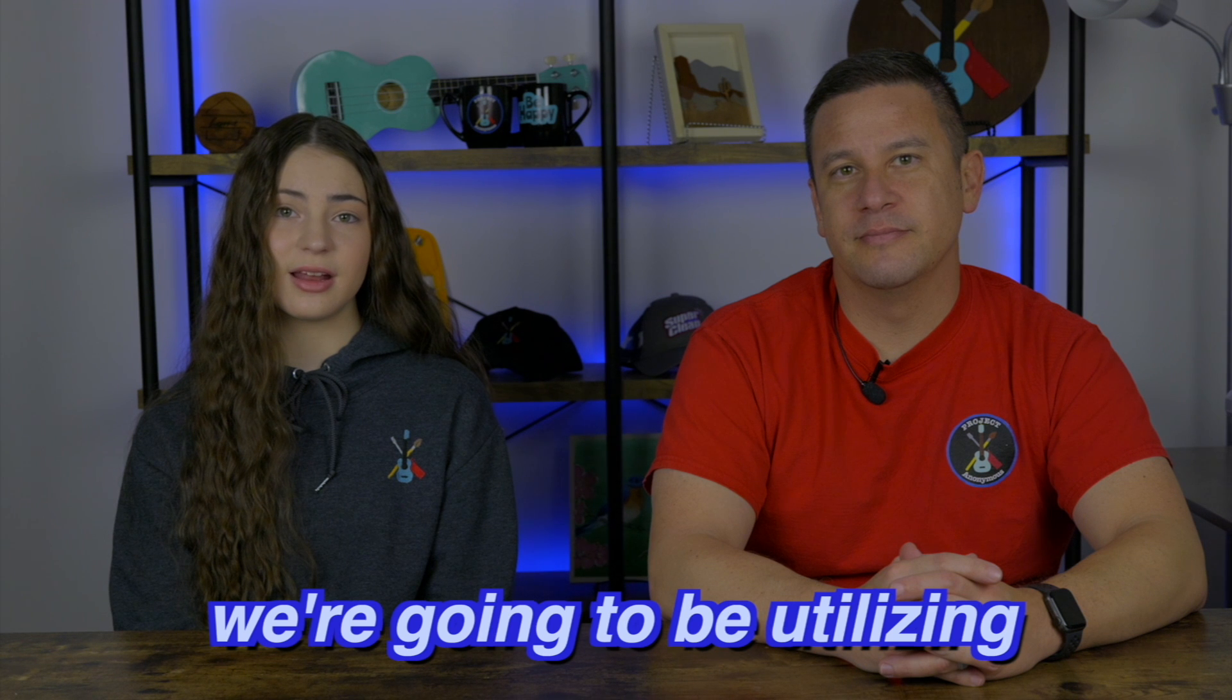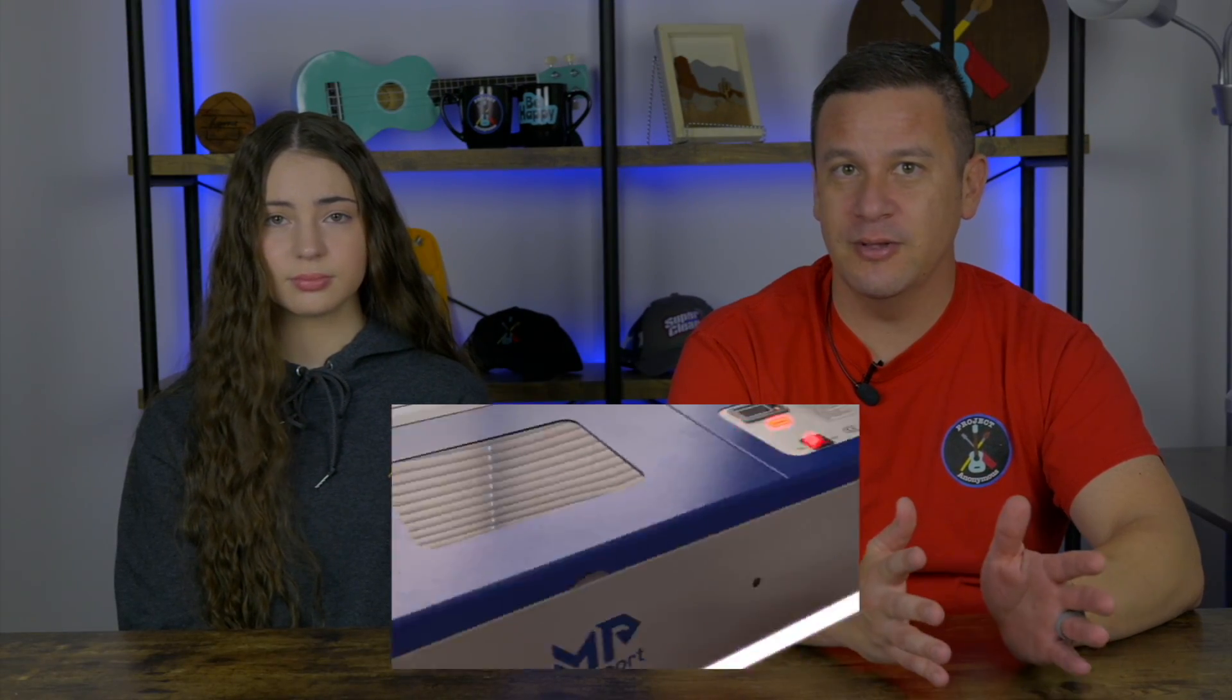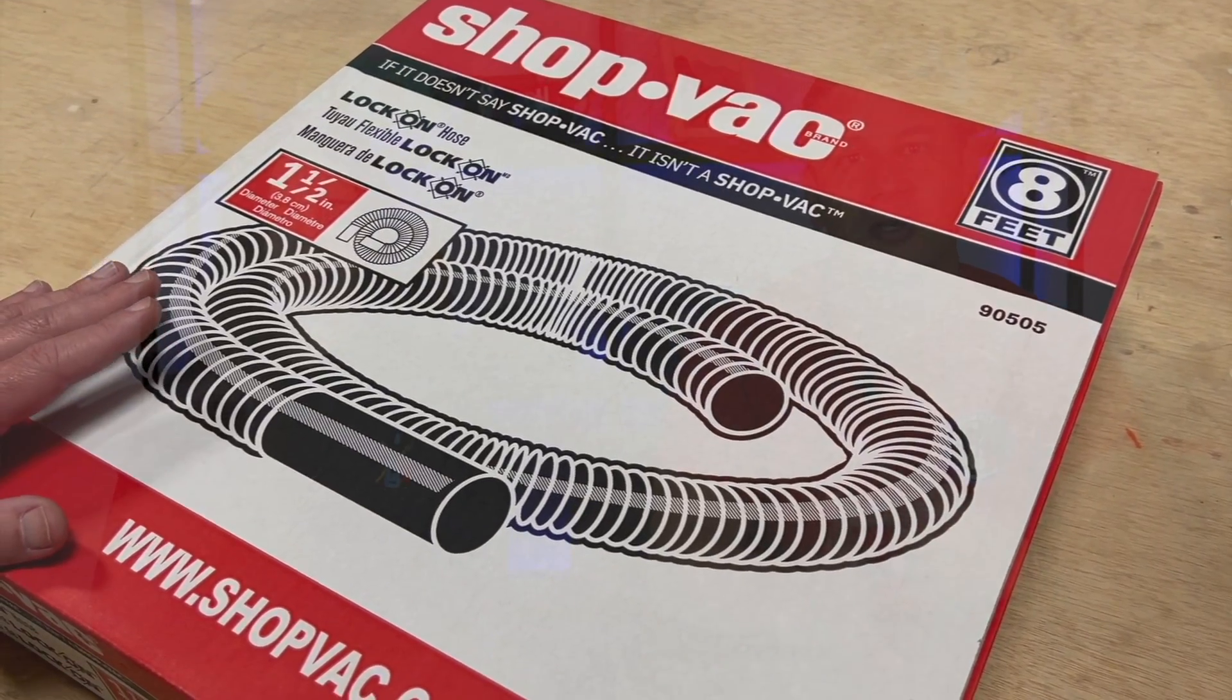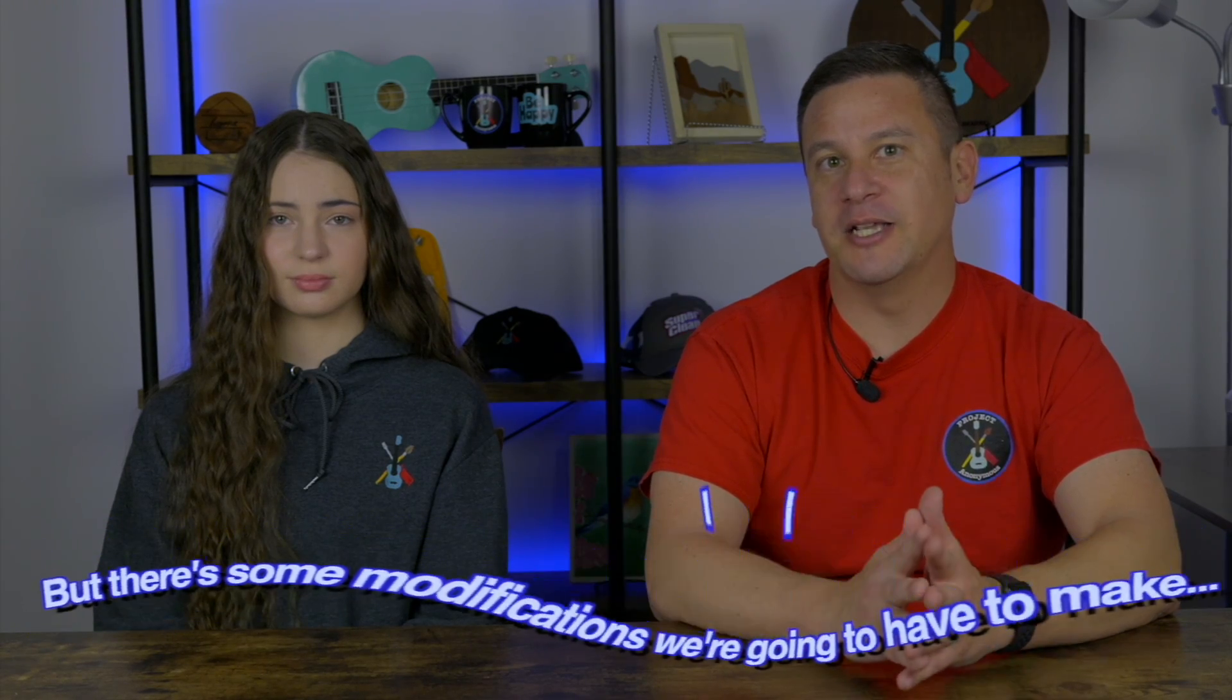So for today we're going to be utilizing an air purifier from MomPort and we're going to be using it for two different lasers. We've already shown this air purifier in the past that we have currently connected to our CO2 laser from MomPort. Today since we've installed our shield around our fiber laser we need to find a way to evacuate the smoke and stuff that comes off of our laser engravings. So we're going to utilize a vacuum hose to connect to our current air purifier but there's some modifications that we're gonna have to make.